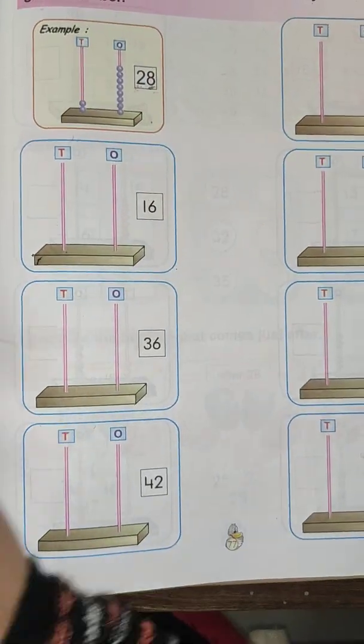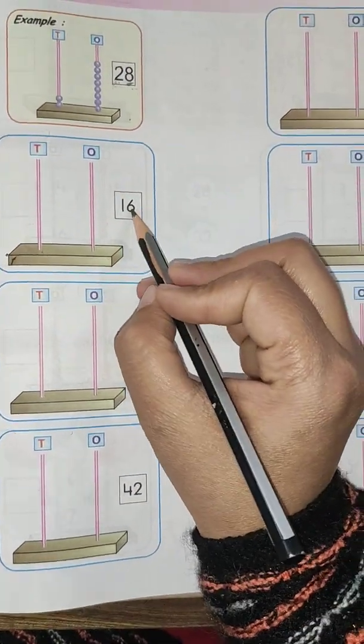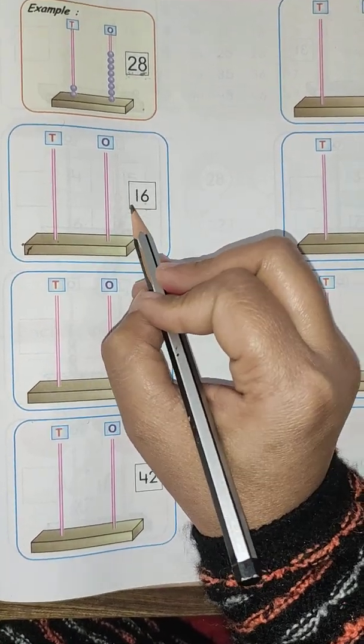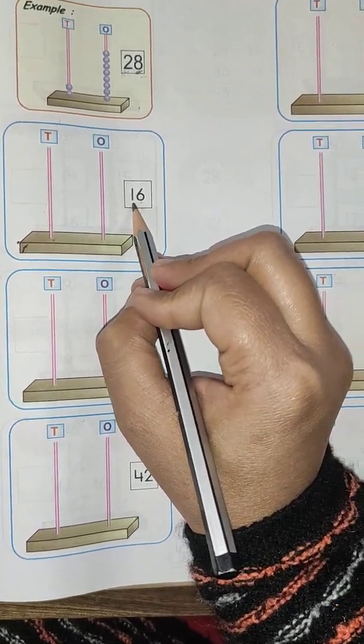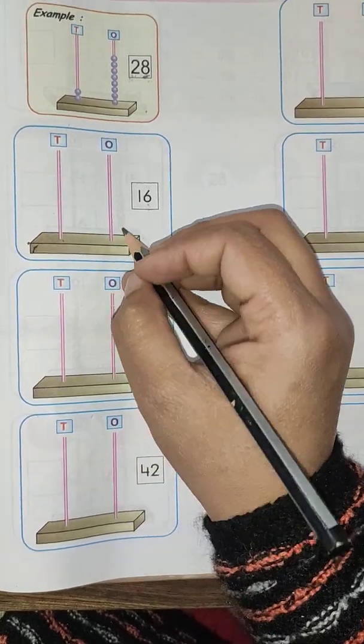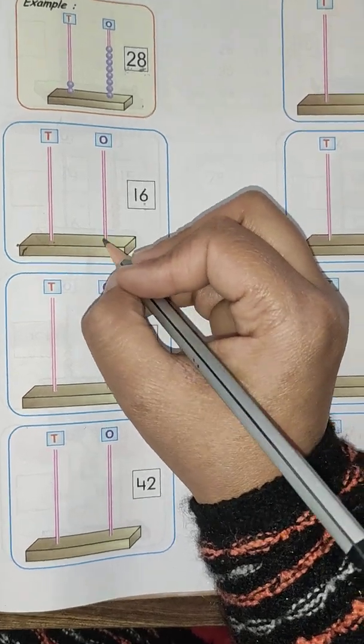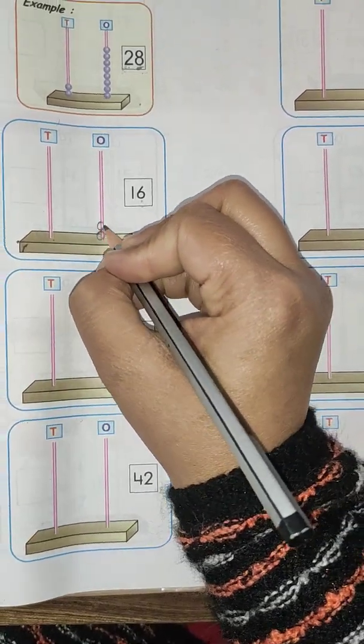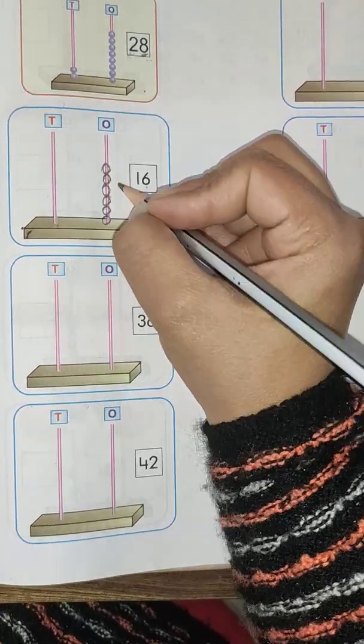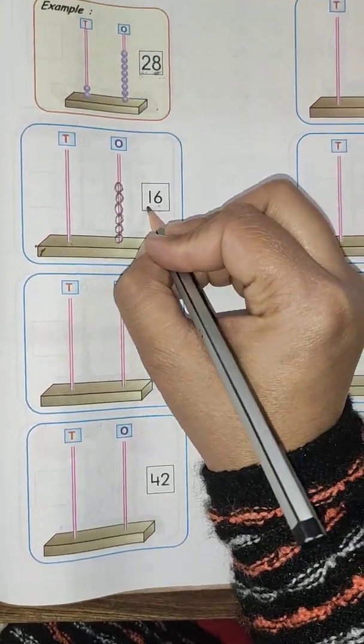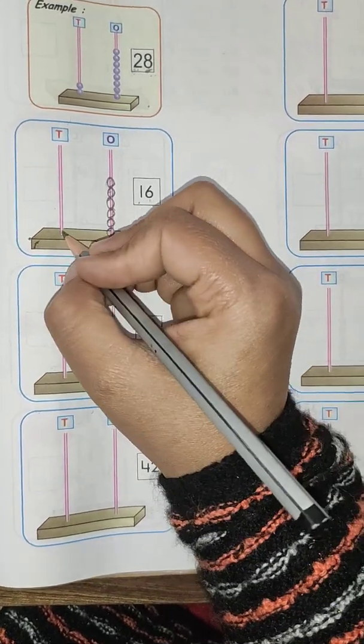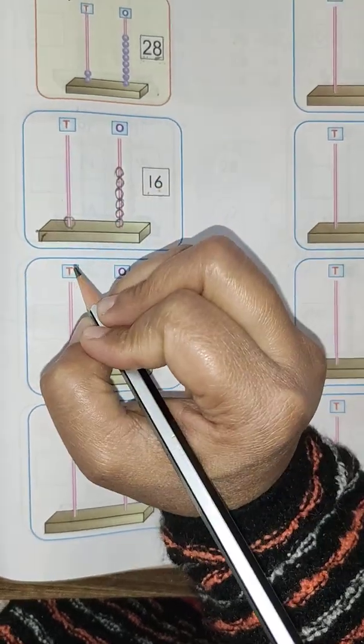Now we will see the next. In place of ones is 6, and in place of tens is 1. So we will draw 6 beads: 1, 2, 3, 4, 5, 6. In place of tens, there is 1, so we draw here only 1 bead.